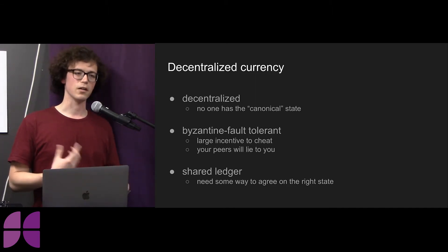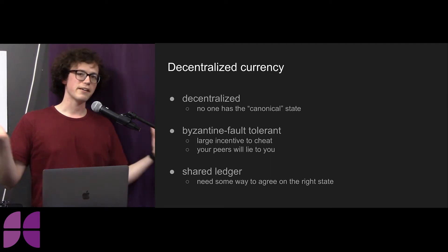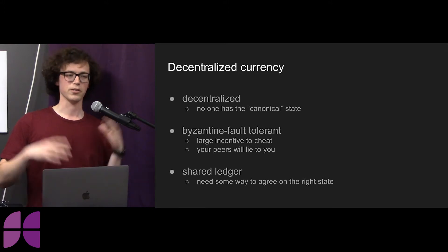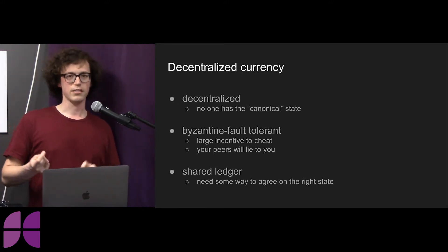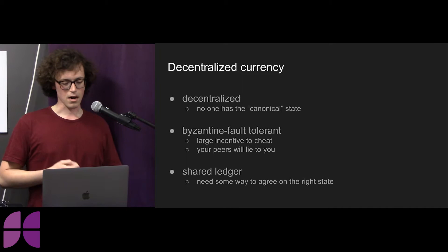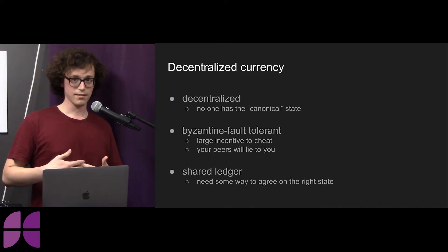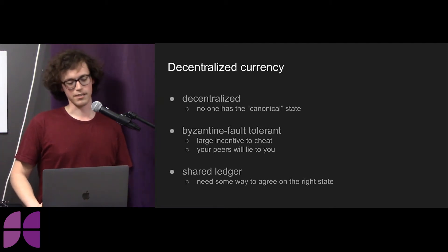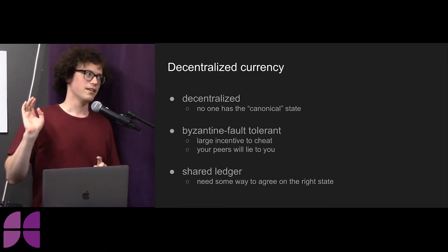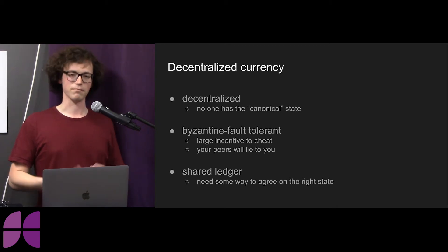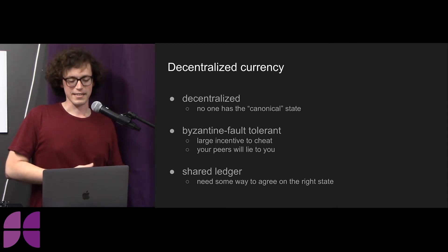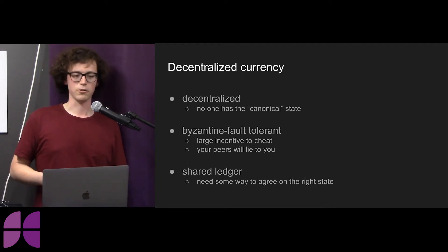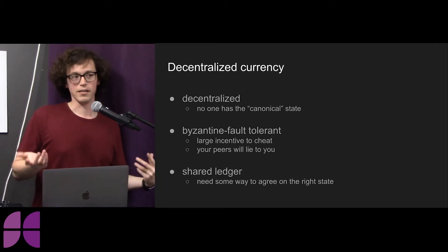Another property is Byzantine fault-tolerance. This is a fancy phrase with a lot of academic literature behind it that basically says: if you have strangers on the internet who have incentive to cheat or lie to you, they will. That's something we need to account for, because the setting is essentially strangers on the internet trying to come together to do one cool thing, and some of them realize they could have a short-term windfall by lying about, say, the price of Ethereum.